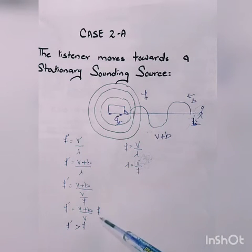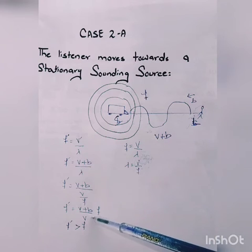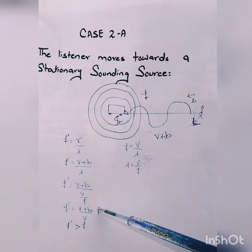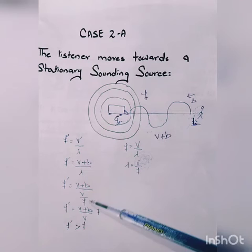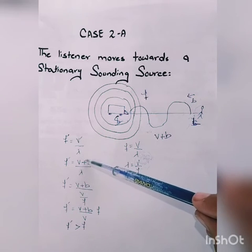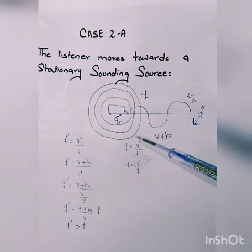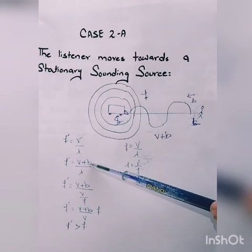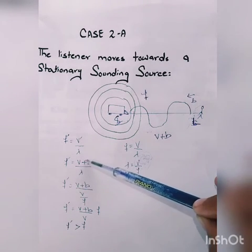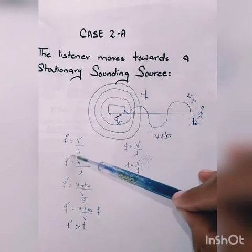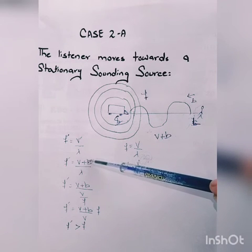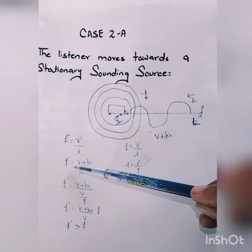The wavelength remains the same. Substituting the value of wavelength V divided by F, we get the new expression: F' equals V plus B, divided by V, multiplied by F. This expression shows that there is an increase in frequency. The term B is added to the numerator — originally the numerator was V, now it is V plus B with the same wavelength in the denominator. When the numerator increases, the result increases, so the frequency increases.